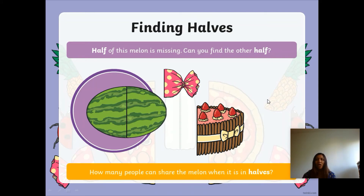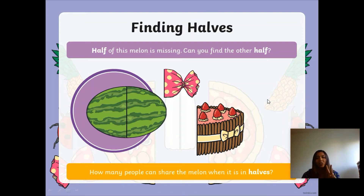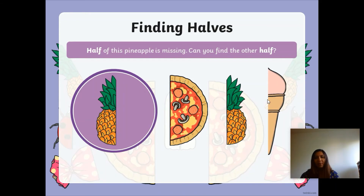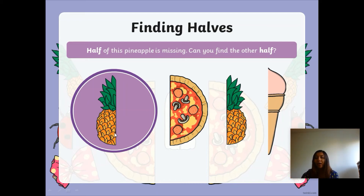How many people can share the melon when it's halved? I wonder if you can tell your talk partner how many people can share this melon when it's into two equal parts. It is two — two people can share the melon. Half of this pineapple is missing. Can you find the other half? There it is, because it's exactly the same. And because it is two equal parts, two people can share the pineapple.